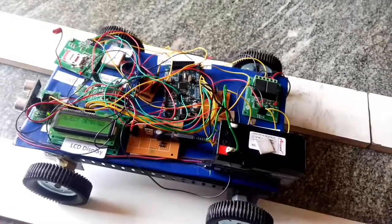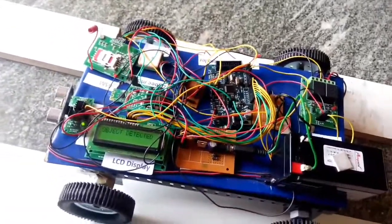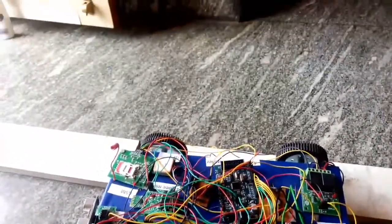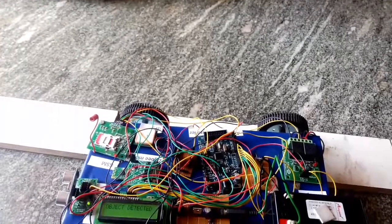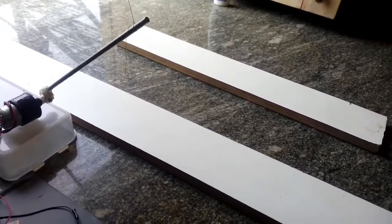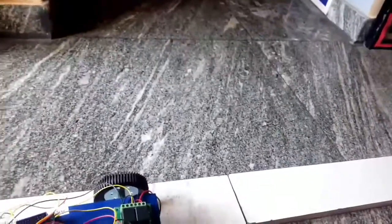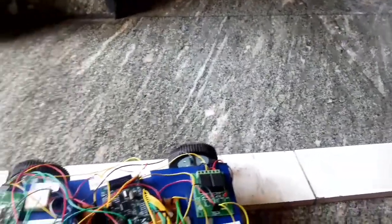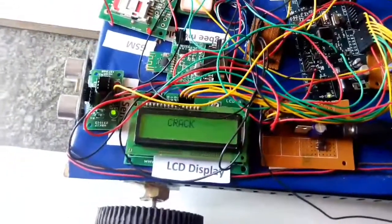When it is near the crack, it will detect the crack and stop automatically. The barricade is opened up automatically, and the crack found is detected and displayed on LCD.